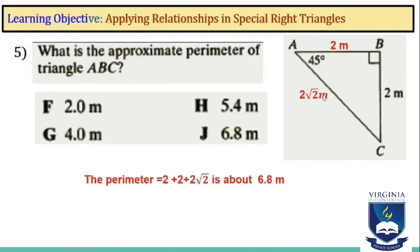Now I am going to find the perimeter of the triangle by adding together the lengths of each of its three sides. So, 2 plus 2 plus 2 square root of 2 equals about 6.8 meters.